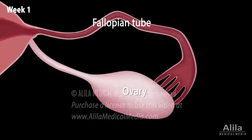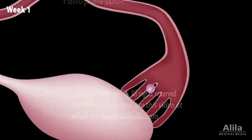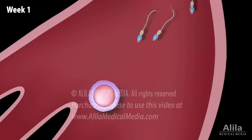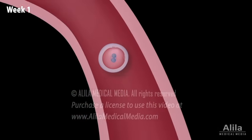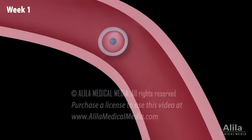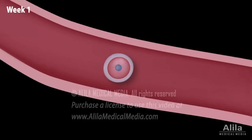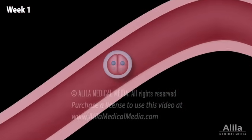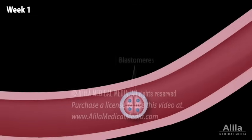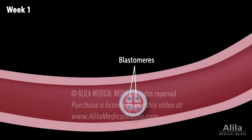Fertilization usually occurs in the ampulla of the fallopian tube. The fertilized egg, referred to as the conceptus at this stage, immediately travels toward the uterus. During the journey, it undergoes several mitotic cell divisions producing daughter cells called blastomeres. This process is known as cleavage, because the cells divide without growing in volume.